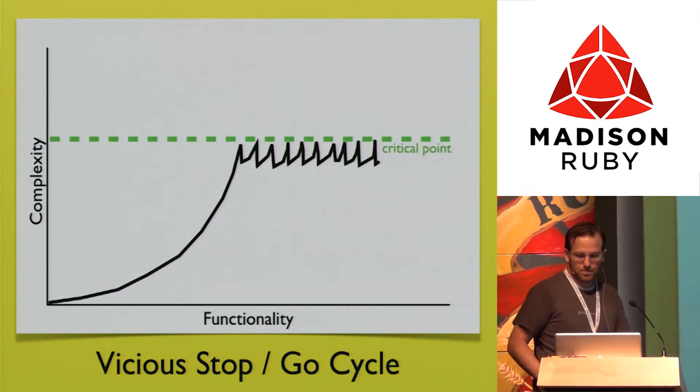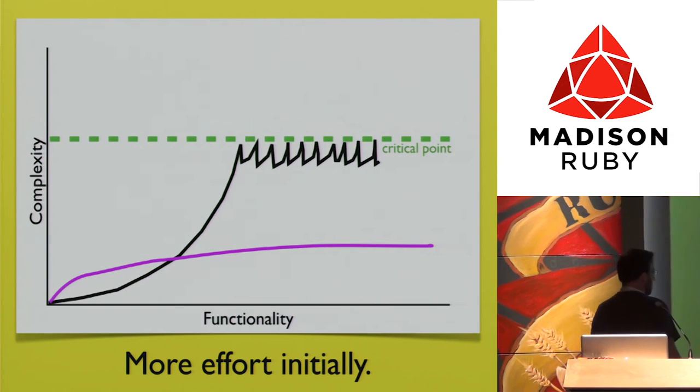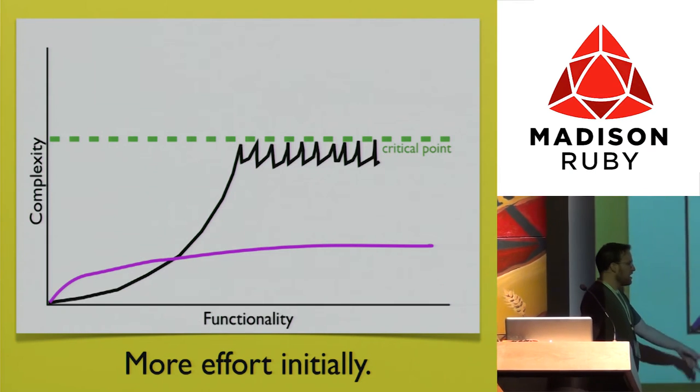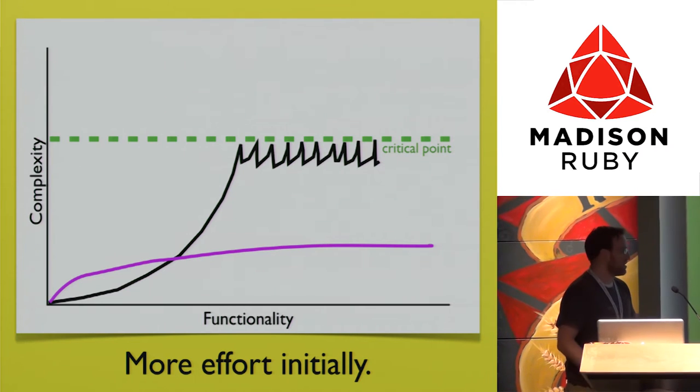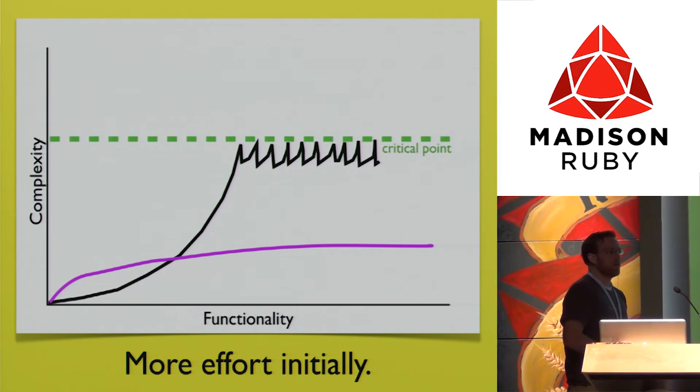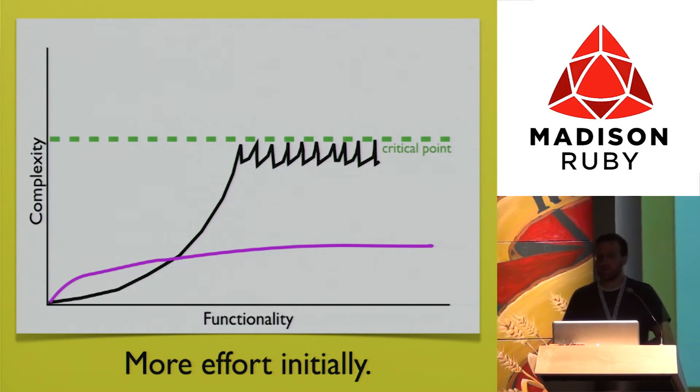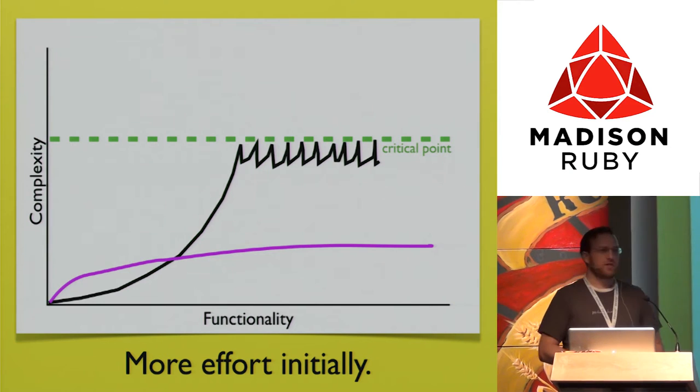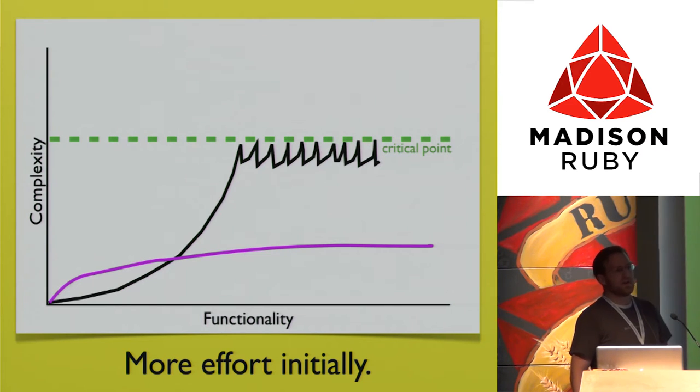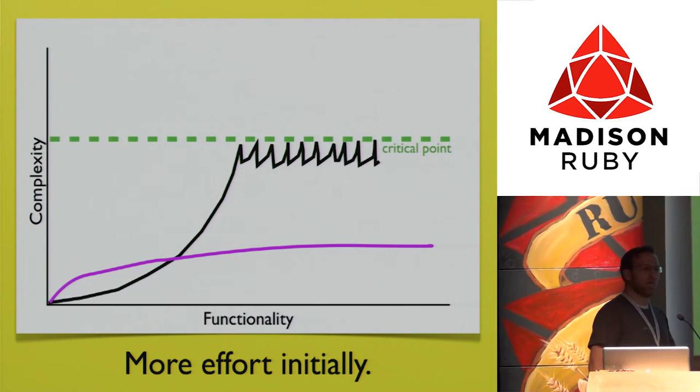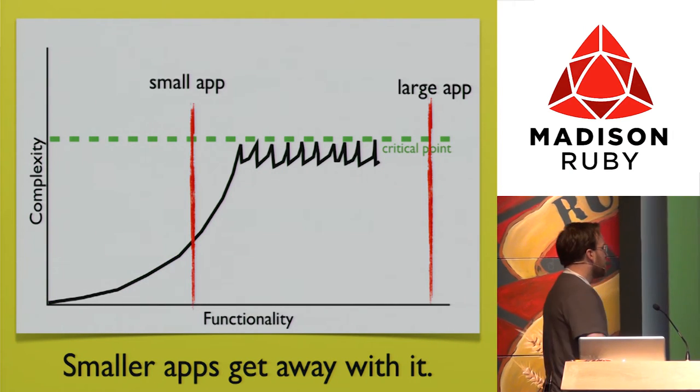What we should be doing is being the purple line. Admit that it takes more effort initially to come up with guidelines, conventions, things our team is going to do so we can keep complexity as low as possible over the longest period of time. That's our challenge as software developers. As long as our systems are living and evolving, we're going to at some point get the complexity up to that critical point. It's just a matter of how long can we hold it off.